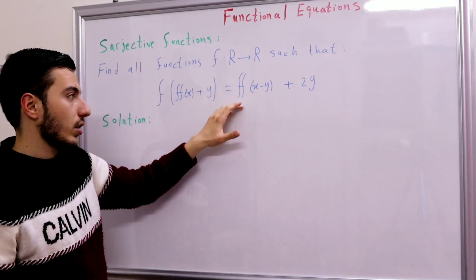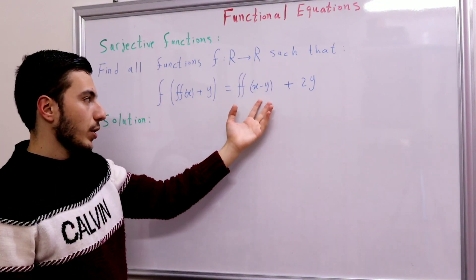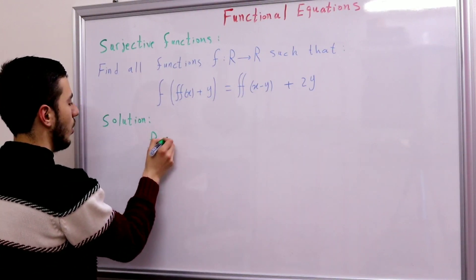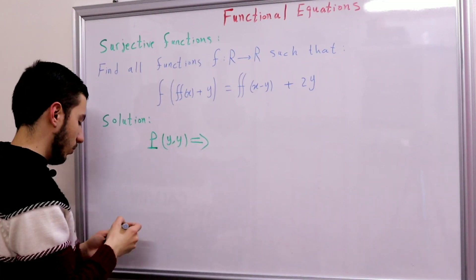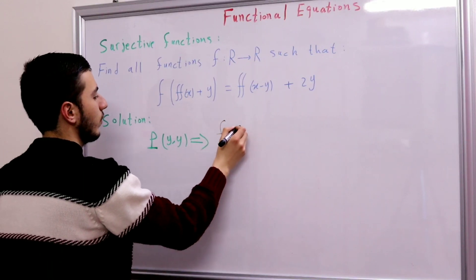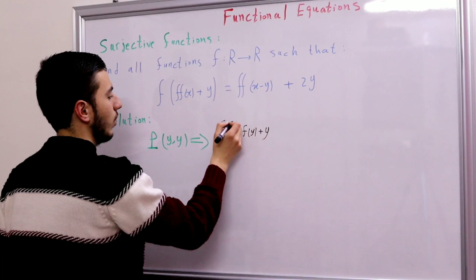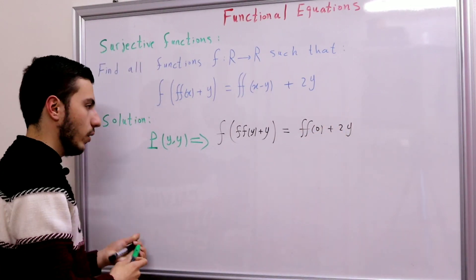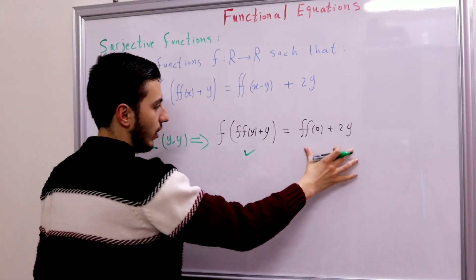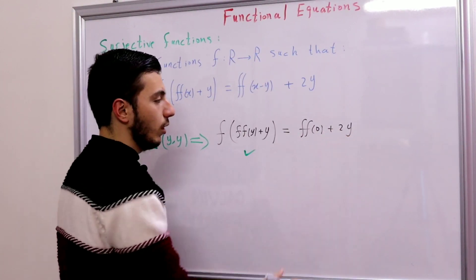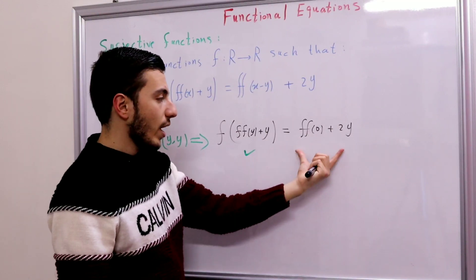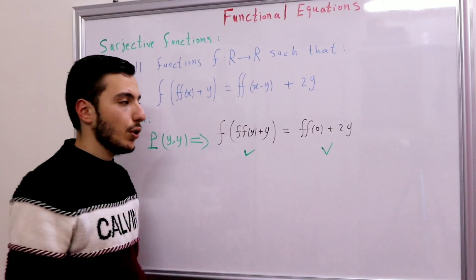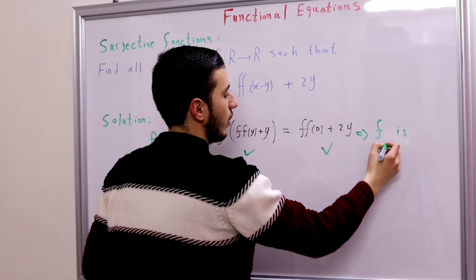So what can we do to get rid of f(f(x−y))? The idea is simple: since we have x−y, we can make this 0 by substituting x with y. So substituting x = y, we get f(f(f(y+y))) = f(f(0)) + 2y. Now on the right-hand side we have a constant plus 2y, which is a subjective quantity. So f of something equals a subjective quantity — yes, f is subjective.